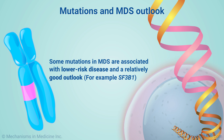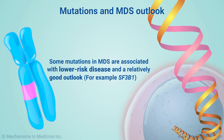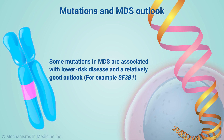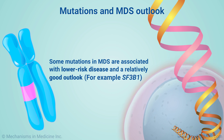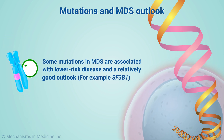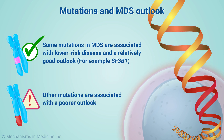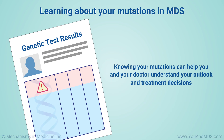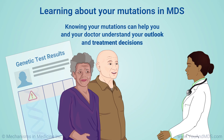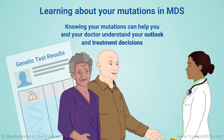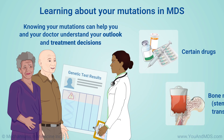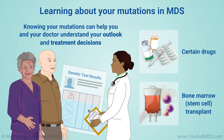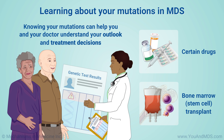Some mutations found in MDS are associated with lower-risk disease. For example, people with a mutation in a gene called SF3B1 in MDS usually have a relatively good outlook or prognosis. Other mutations are associated with a poorer outlook. Knowing what mutations and how many you have can help you and your doctor understand your outlook, including how you will respond to certain drugs or a bone marrow or stem cell transplant. This can help you make treatment decisions.